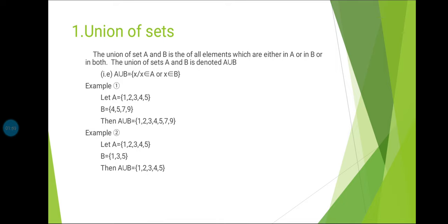Example 1: Let A = {1, 2, 3, 4, 5} and B = {4, 5, 7, 9}. Then A union B in ascending order is {1, 2, 3, 4, 5, 7, 9}.